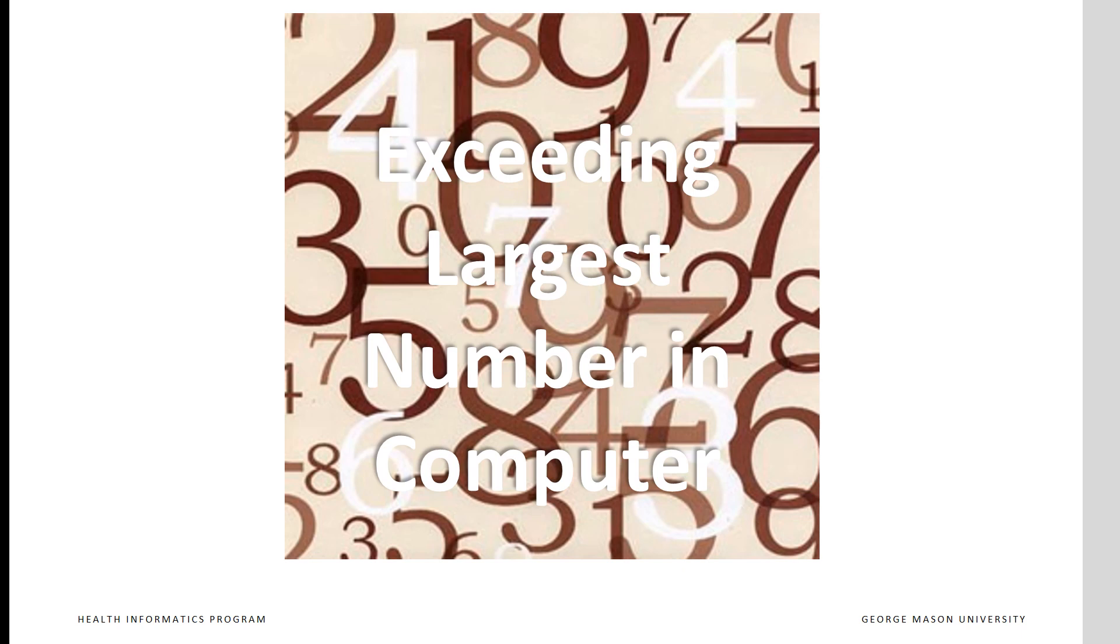First, the product of the likelihood ratios may exceed the largest precision or number allowed in the computer. Some patients have hundreds of diagnoses in their records, and the product of these likelihood ratios could be a number too large. A simple IIF statement can avoid this problem. When sum of the log of the value is too large, we can just replace the sum with a sufficiently large number beyond which we care not.